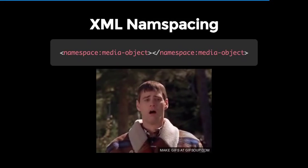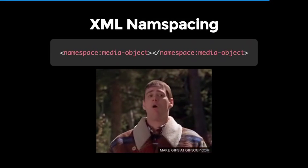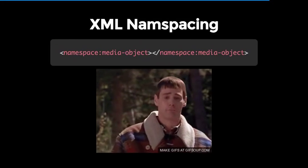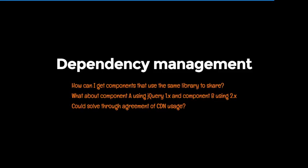One stopgap is XML namespacing — though it's a bit like our friend Lloyd from Dumb and Dumber; it's hideous and I don't want to be doing that. Another issue is dependency management: how can I get components that use the same library to share it and not re-download? If one component pulls in jQuery, how can another component share it? And what about a component using two different versions — do you download both, can they share, do you get conflicts? It could potentially be solved through CDN usage, but that's a half-measure. We really need a way to share libraries without downloading 36 different jQuery versions for 36 different elements.